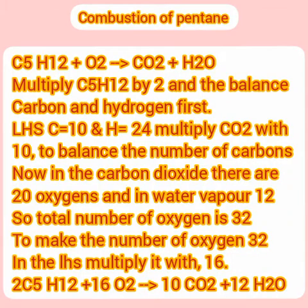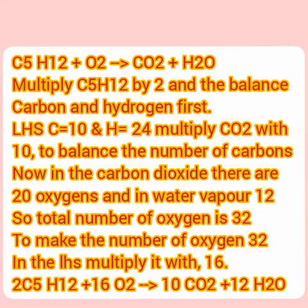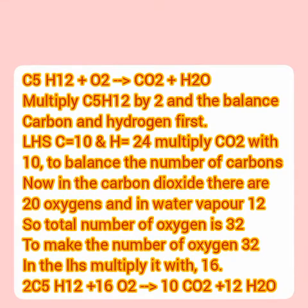The last one for us is pentane. Pentane means 5, therefore the carbon number will be 5. C5H12 plus O2. It is burning in oxygen — a combustion reaction. Therefore, carbon dioxide and water vapor will be produced, with a lot of heat, of course. All these are exothermic reactions. Also, you can say all these are redox reactions — oxidation and reduction are also taking place. When that topic comes, we can use the same equations. Now the first step is to multiply C5H12 by 2. That makes carbon 10 and hydrogen 24.